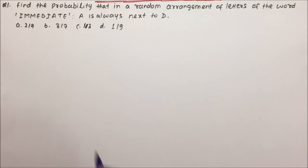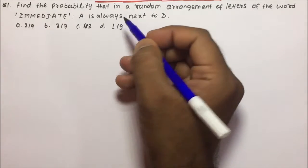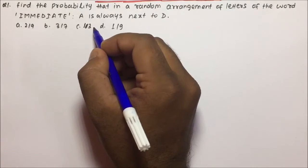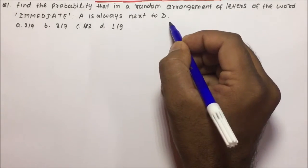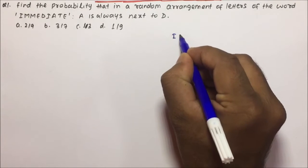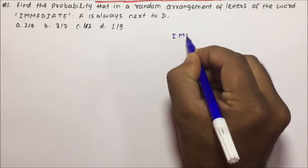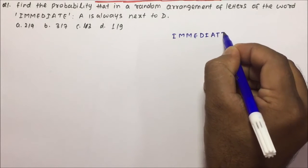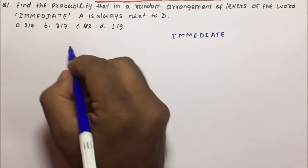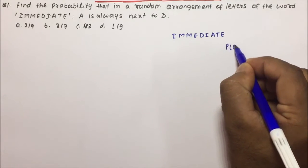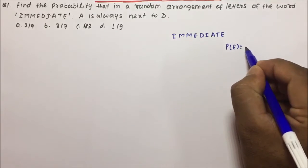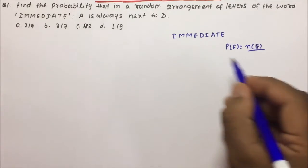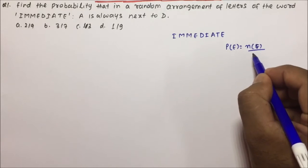Starting with question number one: find the probability that in a random arrangement of letters of the word IMMEDIATE, A is always next to D. So we have the word IMMEDIATE, and we have to find out the probability that A is always next to D in that random arrangement.